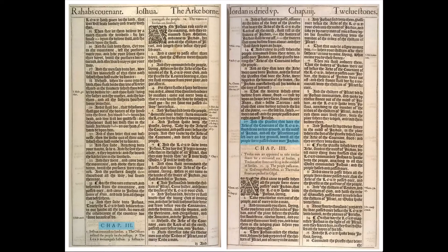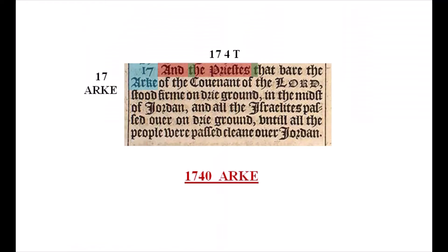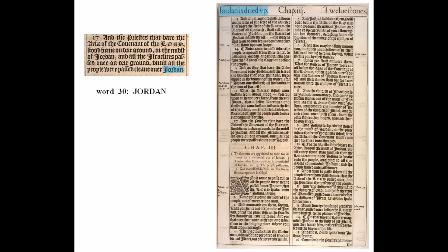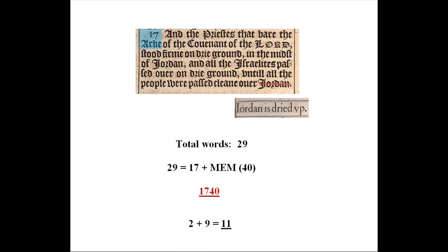We find it again in Joshua, chapter 3, verse 17. If you count the letters or the words, the fourth begins with T — 1740 — and just above the 17 is the word 'ark': 1740 ark. Along the title it reads 'Jordan is dried up.' The waters were divided by the power of the ark and the Israelites crossed. In the verse, 'Jordan' is the 30th word. Now, if the Jordan is dried up, don't count it, giving the verse 29 words. 29 is 17 plus mem, or 1740, and 2 plus 9 equals 11.